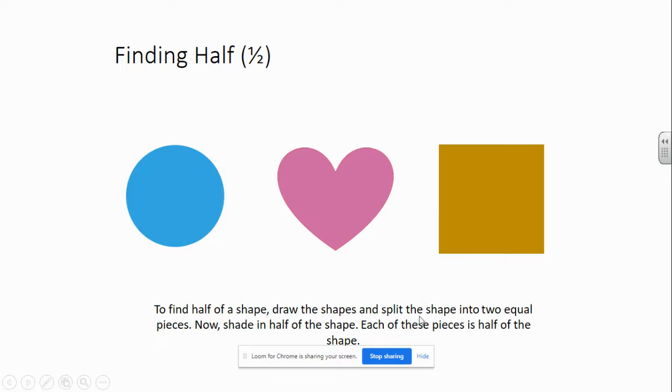What we're going to do is, first I would like you to pause the video and draw these three shapes. The circle, heart, and square. Once you have drawn these shapes, I would like you to split the shapes into two equal pieces. Now remember from yesterday how you had split the shapes into two equal pieces.